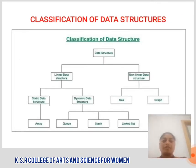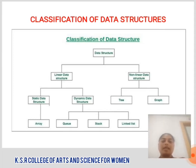Classification of Data Structures: Data structure is categorized into two types — Linear Data Structure and Non-Linear Data Structure. Linear Data Structure is again classified into two types: Static Data Structures and Dynamic Data Structures. Non-Linear Data Structure is classified into two types: Tree and Graph. Static Data Structure is again classified into Array, and Dynamic Data Structure is further classified into Queue, Stack, and Linked List.